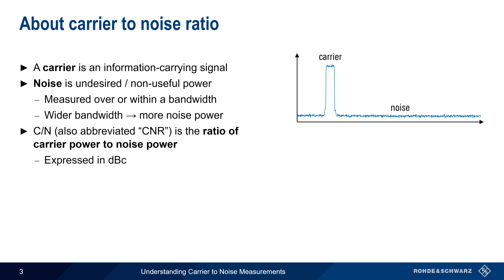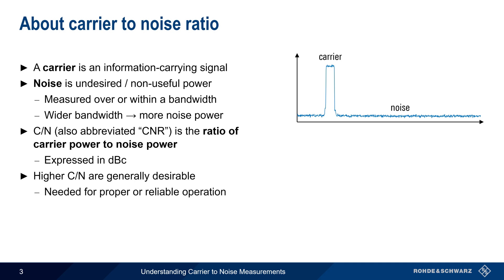This ratio is expressed in units of dBc — that is, the difference in dB between the carrier power, C, and the noise power. Generally speaking, a high carrier-to-noise ratio is always desirable, in part because a certain minimum CNR is needed for reliable signal reception and demodulation. In modern digital modulation systems, a higher carrier-to-noise ratio corresponds to lower bit error rates.